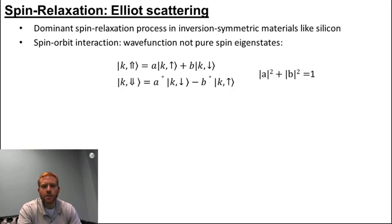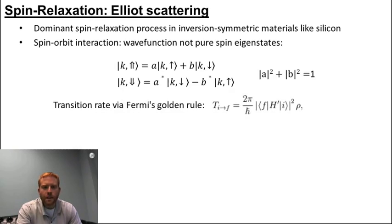We can calculate the transition rate between these states, constituting a spin flip, due to momentum scattering of these free electrons from wave vector k to k prime, by using the so-called Fermi Golden rule. This first-order expression is proportional to the square of the matrix element of the scattering potential coupling the two initial and final states, and the density of final states, rho.